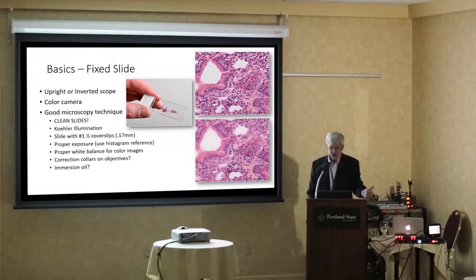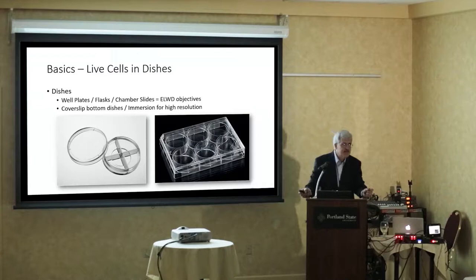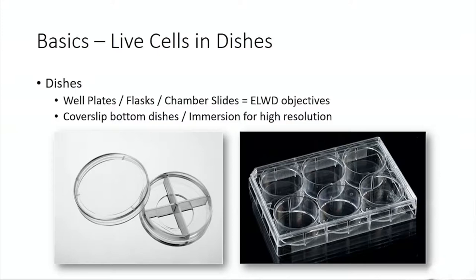Now let's get into live cells. Somebody's coming with live cells — there are different kinds of dishes: a 35 mm dish, a multi-well plate. Generally those have to be looked at on an inverted scope. An inverted scope needs long working distance lenses because the thickness of the plastic underneath is so much that you'd hit it with a regular lens. But if you want high magnification, you can't do it with those — you need to use glass bottom dishes.